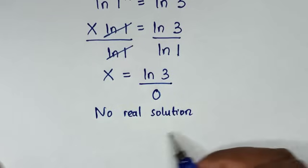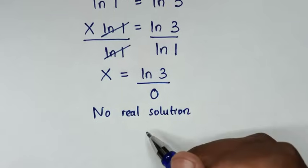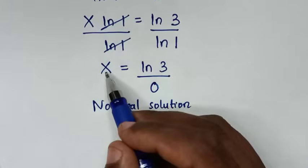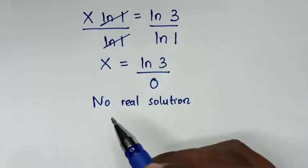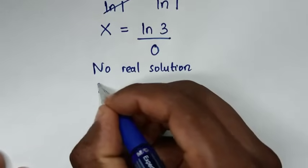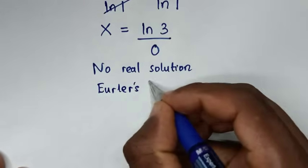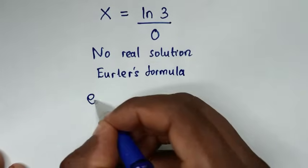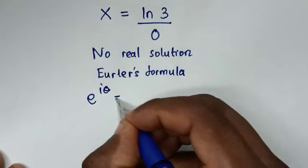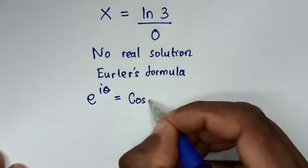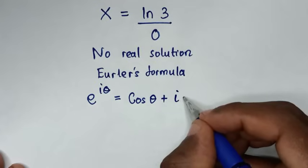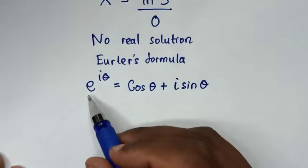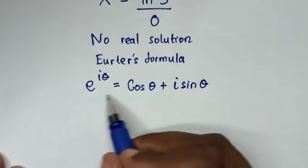If there is no real solution, there might be a complex solution. To check for a complex solution for x, we'll solve by using Euler's formula, which is e to the power of i·θ is equal to cos(θ) plus i·sin(θ).